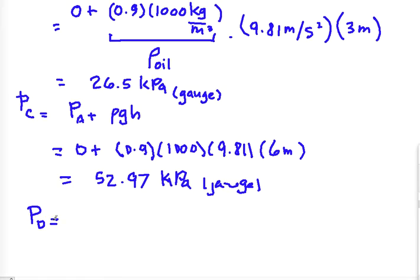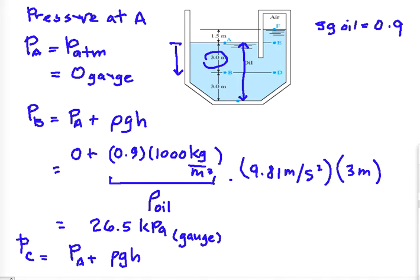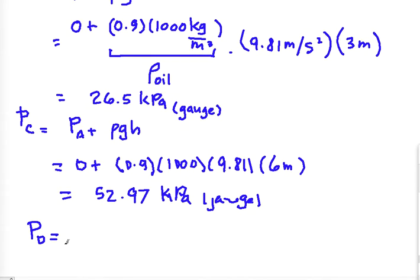Pressure at D. Now if you take a look at the diagram here, D and B are at the same elevation from where point A, which is the atmospheric pressure, is. Now all points having the same depth will carry the same pressure, provided it is under the same fluid, and in this case here is oil. So it means that point D and point B, or even somewhere here, will have the same pressure. So the pressure at point D is actually equivalent to point B, and that is also 26.5 kilopascals.